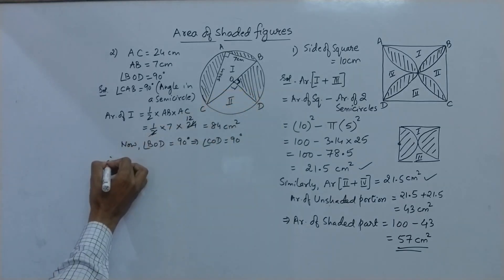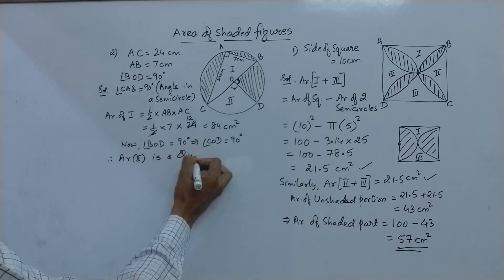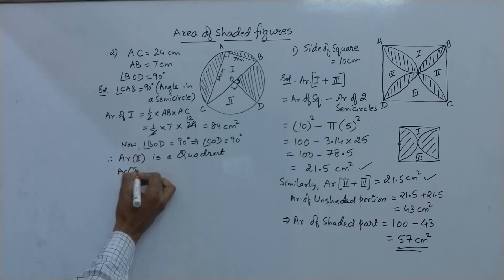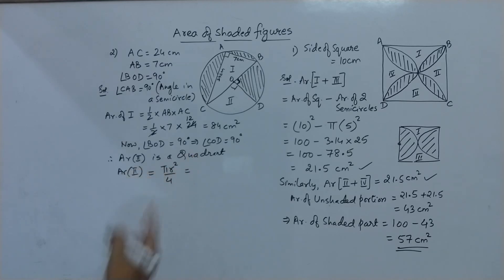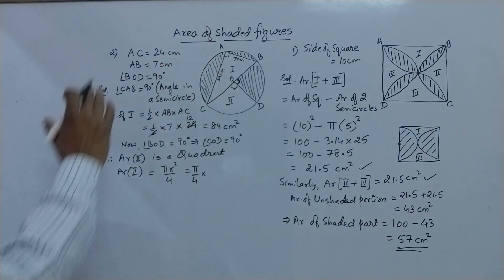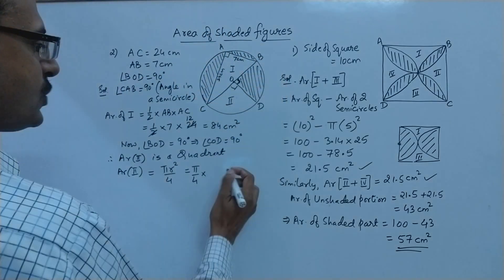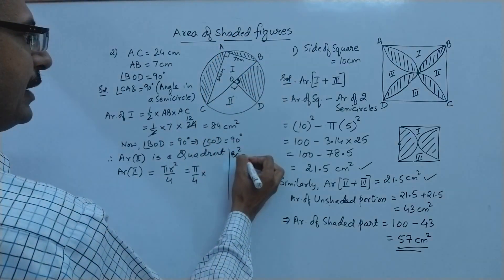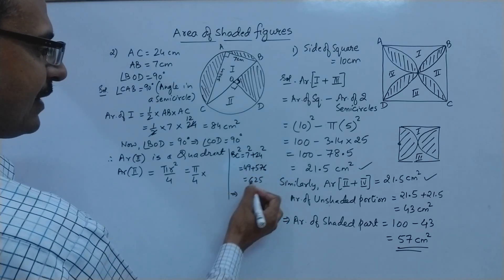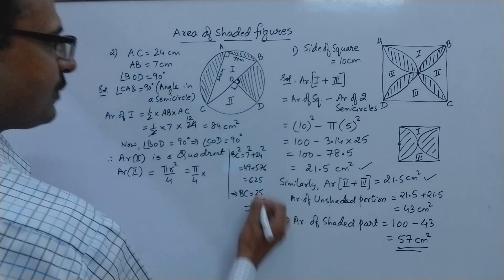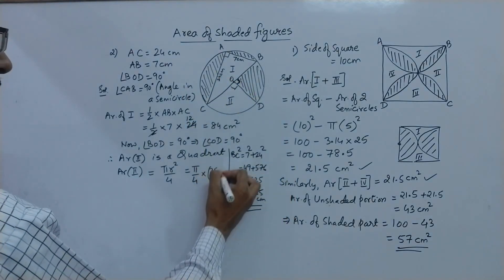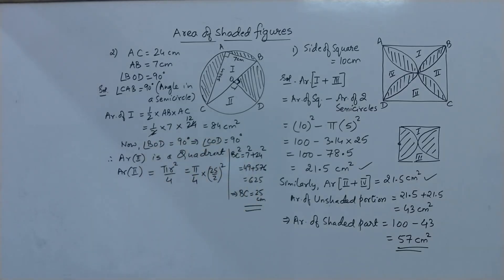Since angle COD = 90°, region 2 is a quadrant — one fourth of a circle. So area of region 2 = πr²/4. We are not directly given the diameter, but we can find BC using the Pythagorean theorem: BC² = 7² + 24² = 49 + 576 = 625, so BC = 25 cm. Therefore the radius = 25/2 cm, and area of the unshaded quadrant = π/4 × (25/2)².